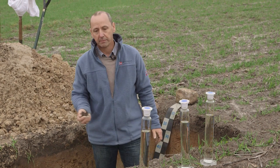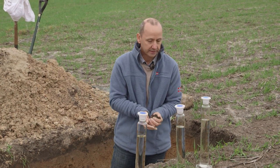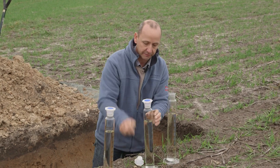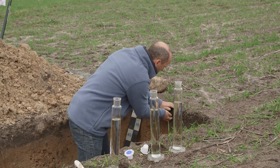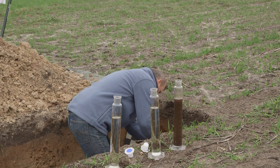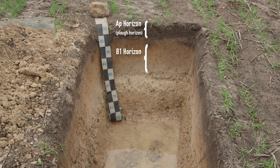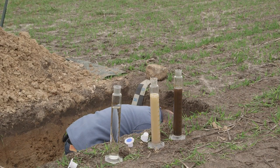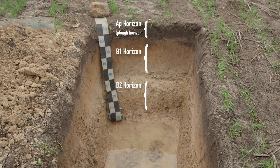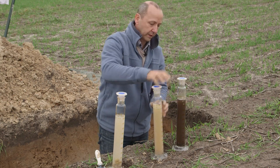There are basically two different methods: hand texturing, and the cylinder settling tube test, which I will demonstrate now. We take small samples from the various horizons and fill them into the cylinders — one for the A horizon, one from the very sandy B horizon, and one from the very clay-rich B horizon. Then we give it a good shake.